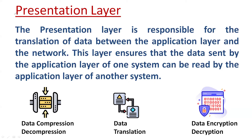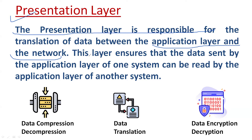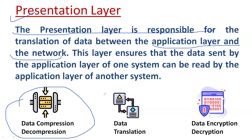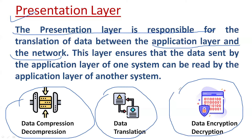The presentation layer is the second topmost layer of the OSI model. This layer is responsible for the translation of data between the application layer and the network. It ensures that the data sent by the application layer of one system can be readable by the application layer of another system. There are three main tasks performed by this layer: data compression, data encryption, and data translation.